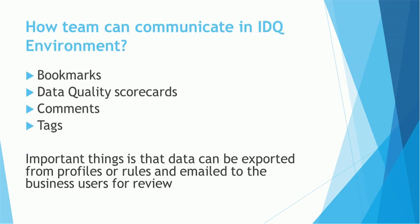How can a team communicate in the IDQ environment? Suppose there are two teams — one is the development team and the other is the business or analyst team. In order to communicate, the teams can use bookmarks, data quality scorecards, and tags and comments are also helpful. An important thing is that data can be exported from profiles or rules and emailed to business users for review. So along with bookmarks, scorecards, comments, and tags, we can also export data using profiles and rules and send it as an attachment to business users.